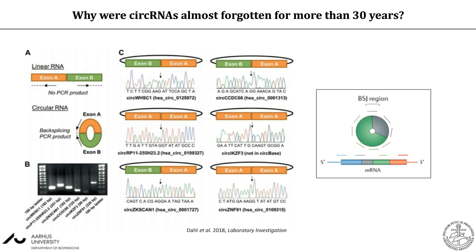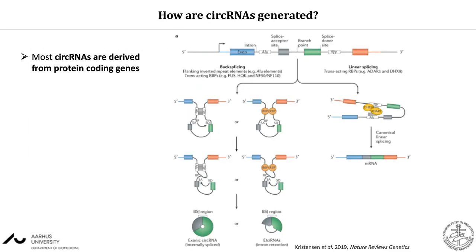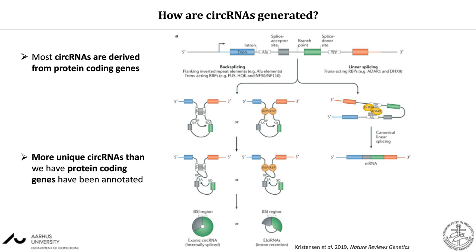When using next generation sequencing for the study of circular RNAs, you have to actively look for them in order to detect them. Only reads that span the back splicing junction region are unique for the circular RNA in question, and these reads do not align to a linear reference genome. In most commonly used bioinformatic algorithms, these reads are discarded. You have to use dedicated bioinformatic algorithms for detection of circular RNAs in RNA sequencing data.